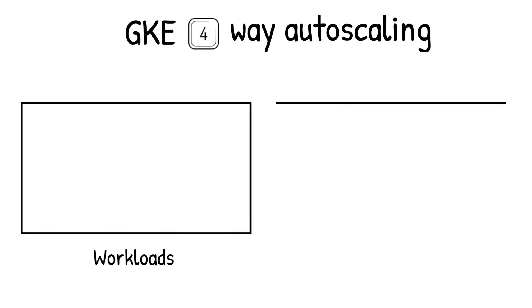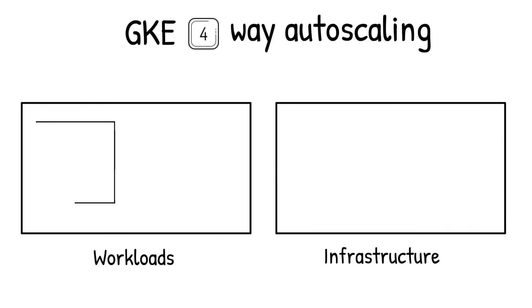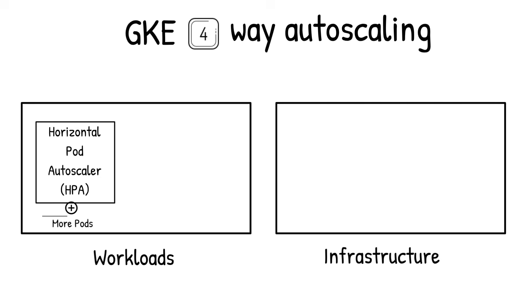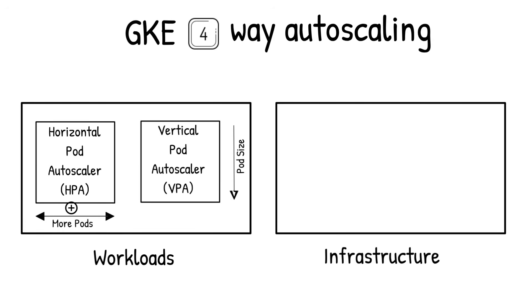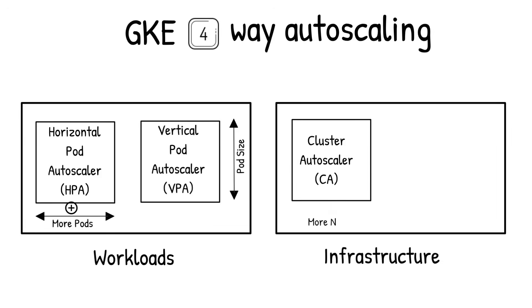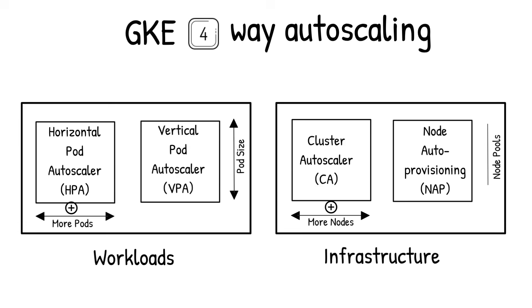GKE also provides four types of autoscaling for workloads and infrastructure. Horizontal Pod Autoscaler for adding and removing pods based on utilization metrics like CPU and memory. Vertical Pod Autoscaler for sizing your pods. Cluster Autoscaler for adding and removing nodes based on the scheduled workload. Node Auto Provisioning for dynamically creating new node pools with nodes that match the needs of your users' pods.